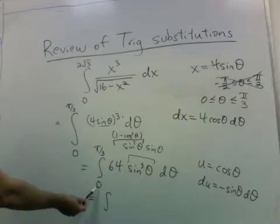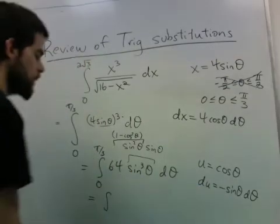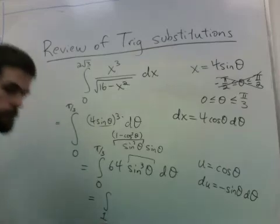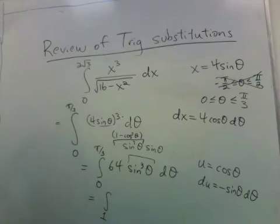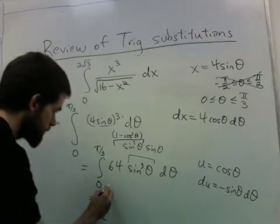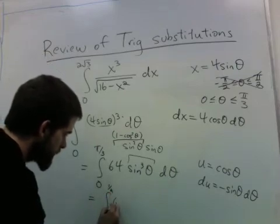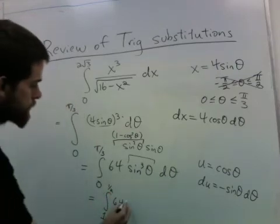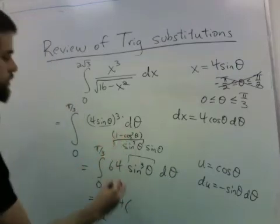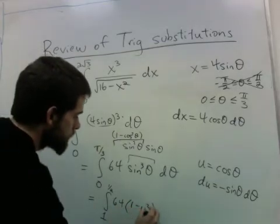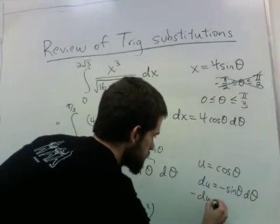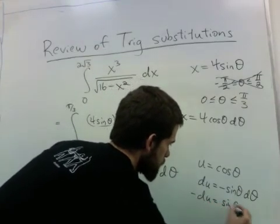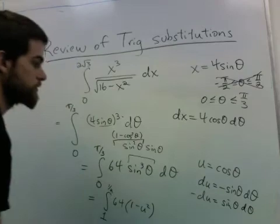And this becomes integral from, let's see, when theta is 0, u is 1. And when theta is pi over 3, u is cosine of pi over 3, which is 1 half. So that's 64 times 1 minus u squared, and I have sine theta d theta, which is negative du.